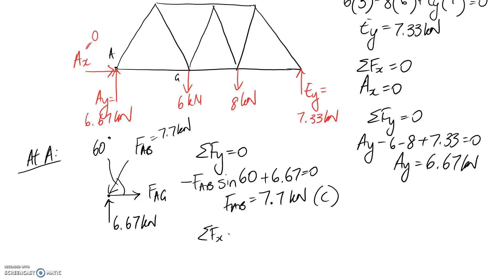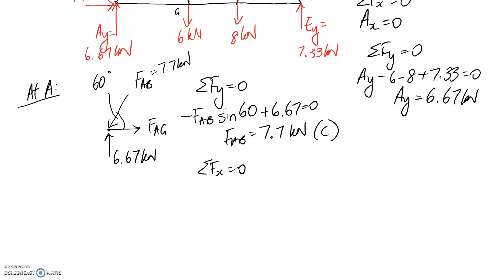If we now go and apply our other equilibrium equation, forces in x, we're going to have FAB part of it going backwards. It's going to be the cos component this time. And then we've drawn this one in the positive x direction. So the force in member AG works out to 3.8 kilonewtons. It comes out positive, which means the direction was correct. So this one is pulling away from the joint, which means it's a tension member.